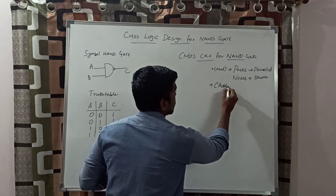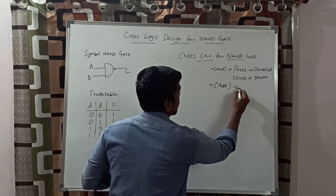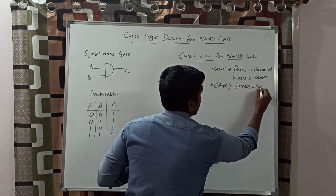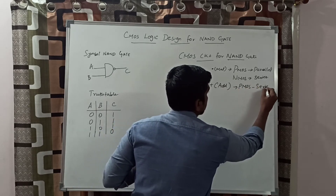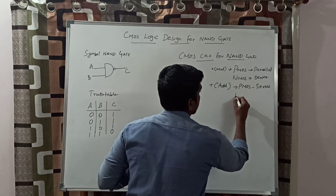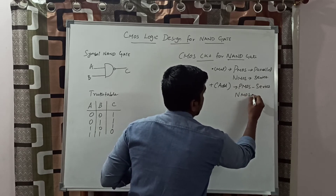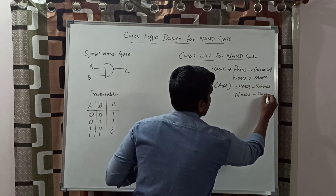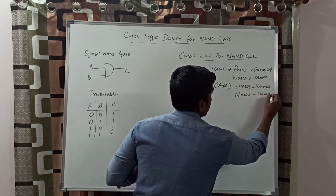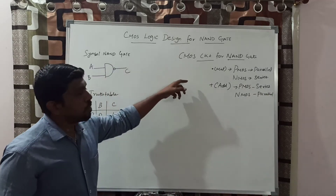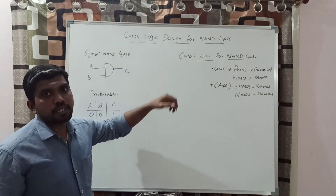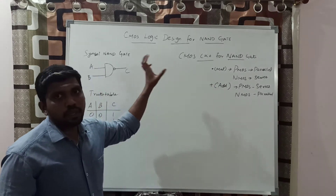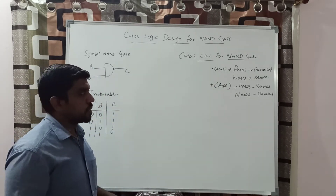Suppose we have an addition function: PMOS connects in series and NMOS connects in parallel. This is the basic rule for designing a CMOS circuit. You apply this rule to the functions.